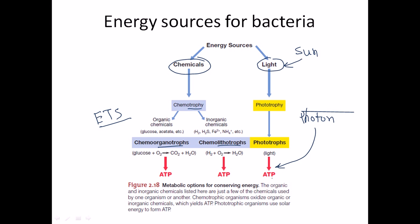In both cases you can see here from the light it can directly convert ATP via photosystem photosynthesis. But for those who are taking glucose or acetate which is the organic sources, they use oxygen to derive carbon dioxide and water to produce ATP. This is glycolysis and Krebs cycle and all these stages.